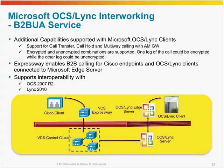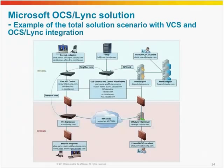Here you can see a deployment example of the total solution with VCS and OCS Lync integration. Internal Lync clients will register on the Microsoft front-end pool, while internal video endpoints register on the VCS control. For public users, Lync clients will register on the Microsoft Edge server, while public video users register on the VCS Expressway. This shows a company introducing OCS Lync into their network to provide Microsoft Lync clients on every desk, in addition to video endpoints, providing video, messaging, and presence capabilities for all staff. When integrating with their existing video network, video endpoints can make and receive calls from Lync clients, and Lync clients can see the presence of video endpoints, making the company network ready for the total video solution.